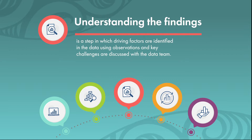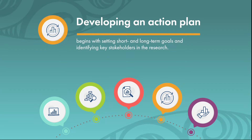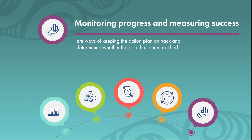Understanding the findings is a step in which driving factors are identified in the data using observations, and key challenges are discussed with the data team. Developing an action plan begins with setting short and long-term goals and identifying key stakeholders. Monitoring progress and measuring success are ways of keeping the action plan on track and determining whether the goal has been reached.